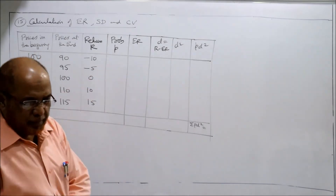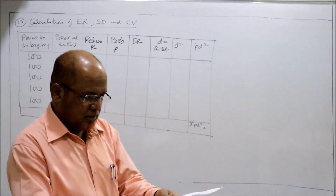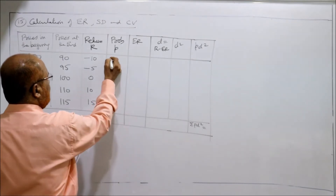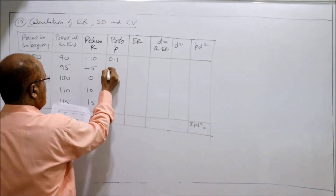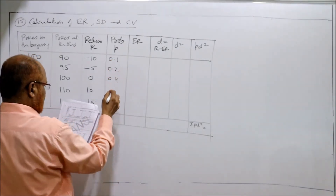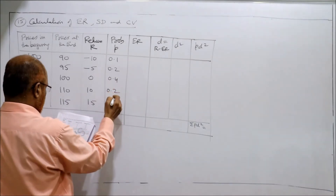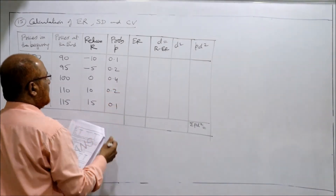Now probabilities are given in the problem. The probabilities are 0.1, 0.2, 0.4, 0.2, 0.2.